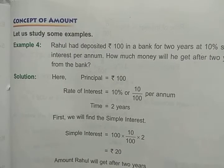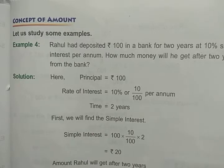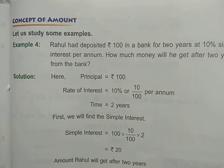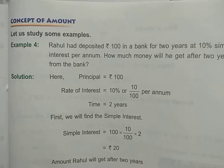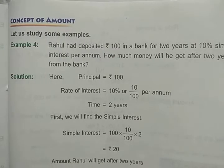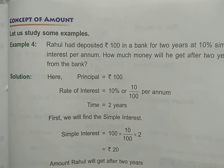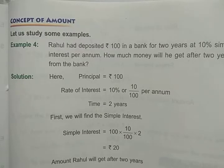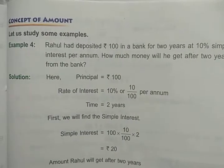We learned that when we deposit money in a bank for a certain time and then withdraw that money, we get interest on it. So the money we deposited is the principal, and the extra money the bank paid us is the interest. Both the principal and the interest are returned to us when we withdraw.